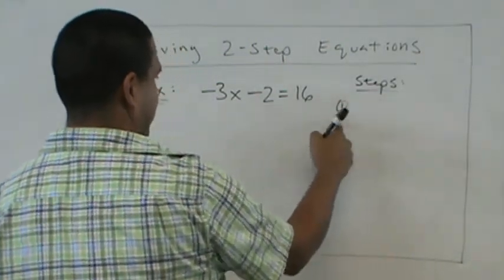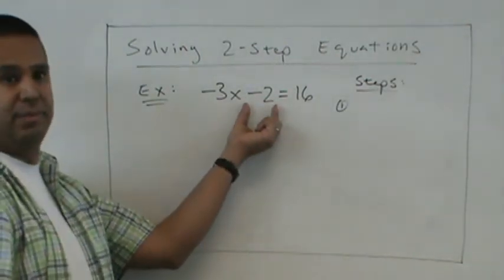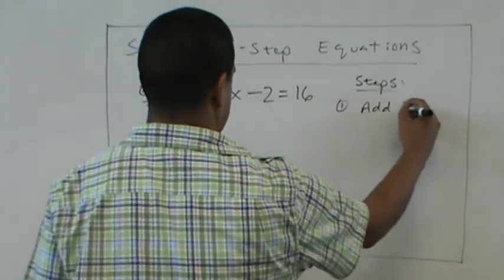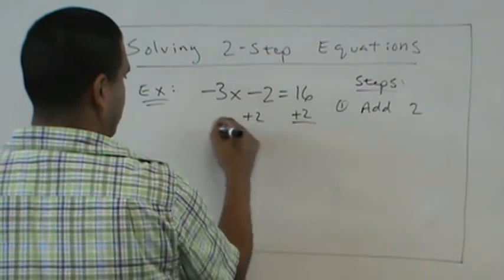Okay. The first step, we notice that this is subtraction. So the first thing we're going to do is add 2 on both sides.